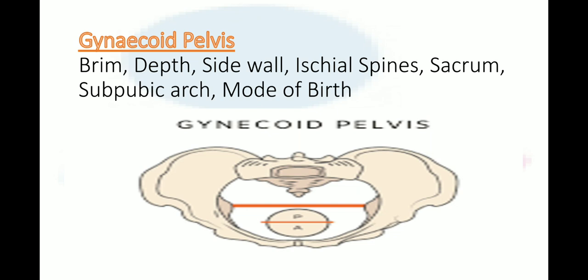Gynecoid pelvis occurs in about 50 percent of women. The brim is slightly oval or transversely rounded — you can see this from the figure. The depth is moderate, the sidewalls are straight, and the ischial spines are blunt and somewhat widely separated. The sacrum is deep curved and the subpubic arch is wide.